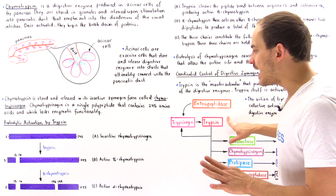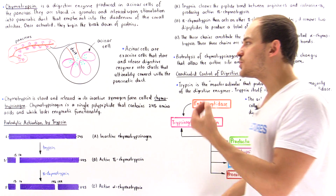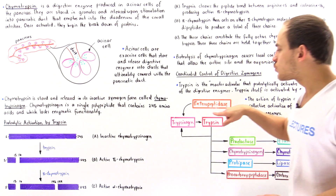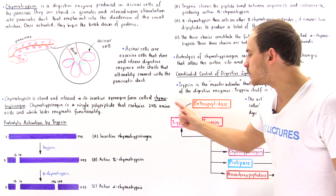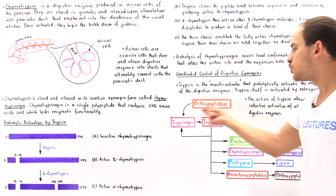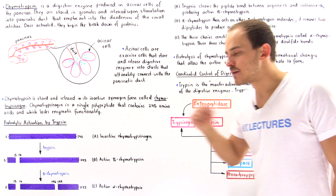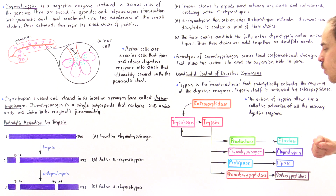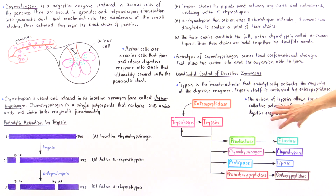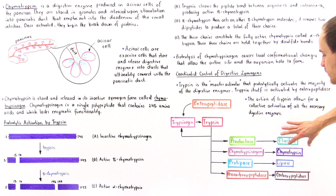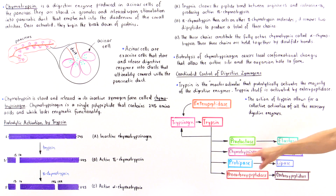Trypsin not only activates other zymogens but also activates itself — once activated, trypsin goes on to nearby trypsinogen molecules and converts them to trypsin, creating an amplification effect. Trypsin can then activate proelastase into elastase, and chymotrypsinogen into chymotrypsin.